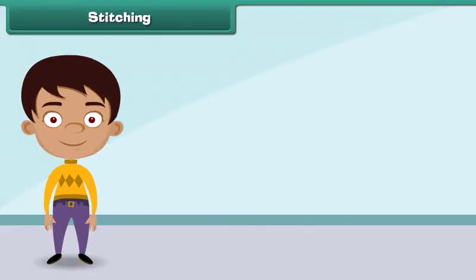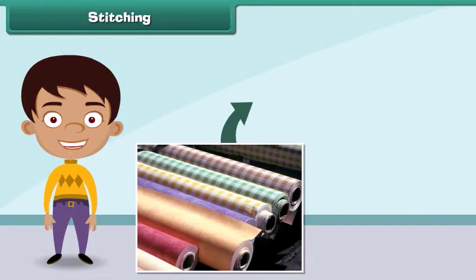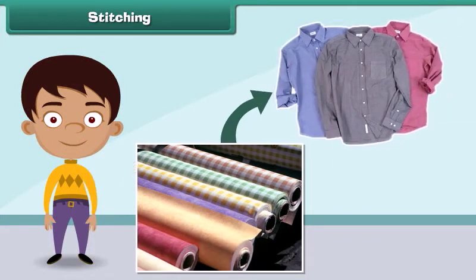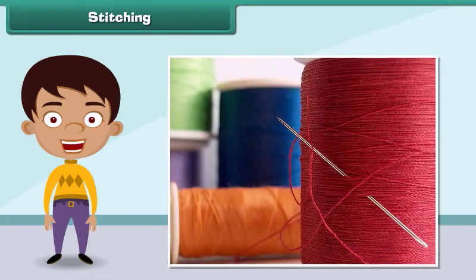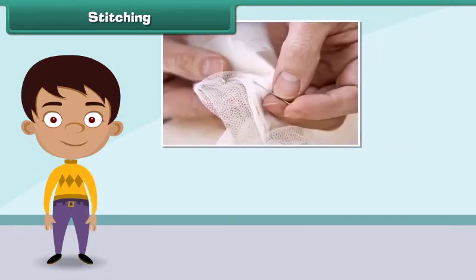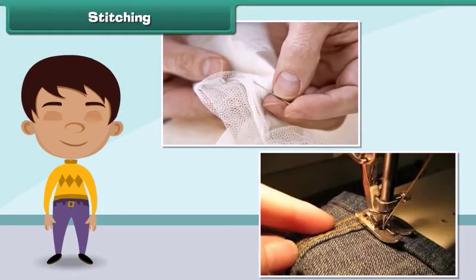Stitching is the process by which fabrics are converted into clothes. It involves sewing a fabric with needle and thread. In olden days, stitching was done by hand, but nowadays stitching is done with machines.